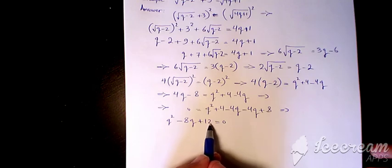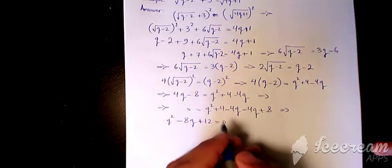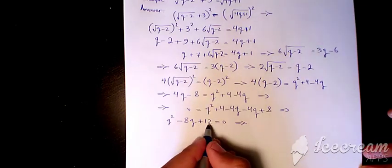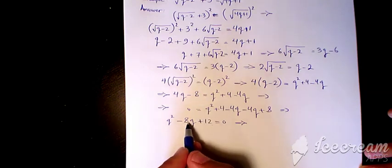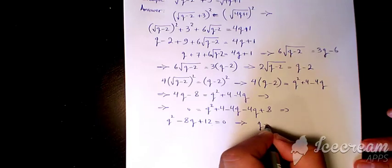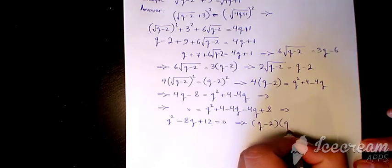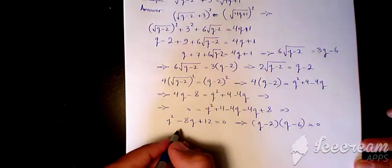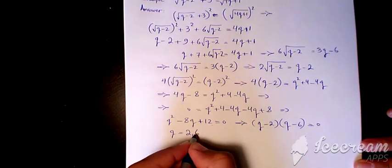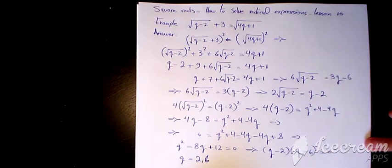So we have negative 2 and negative 6. Negative 2 times negative 6 is positive 12, and negative 2 plus negative 6 equals negative 8. So this factors as (q minus 2)(q minus 6) equals zero. Therefore q equals either 2 or 6.